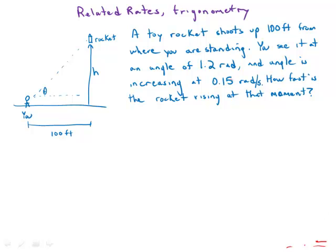What we're given here is dθ/dt is 0.15 radians per second, and that's happening at a time when the angle itself is 1.2. We'd like to relate dθ/dt to dh/dt in this problem.